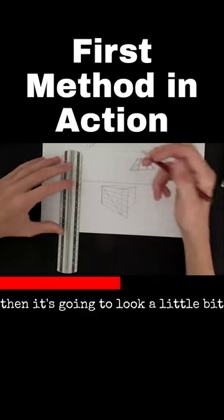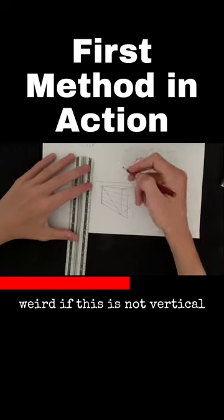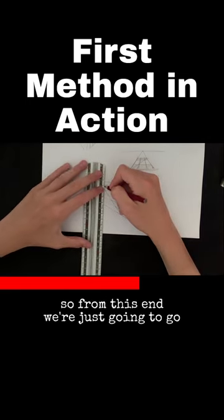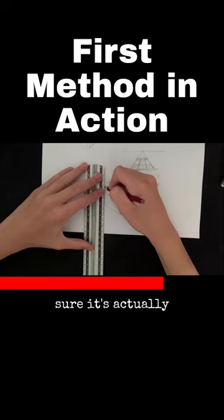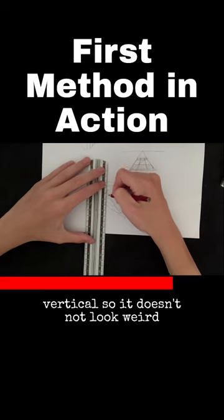It's going to be important because it's going to look a little bit weird if this is not vertical. So from this line we're just going to go vertical. Make sure it's actually vertical so it doesn't look weird.